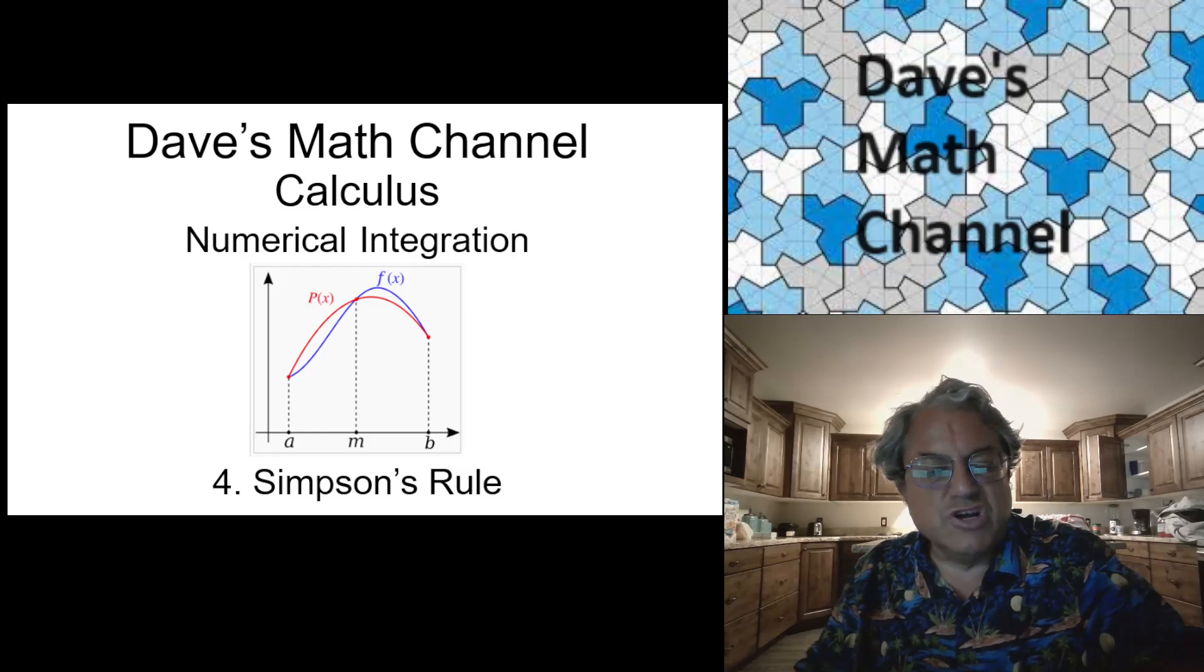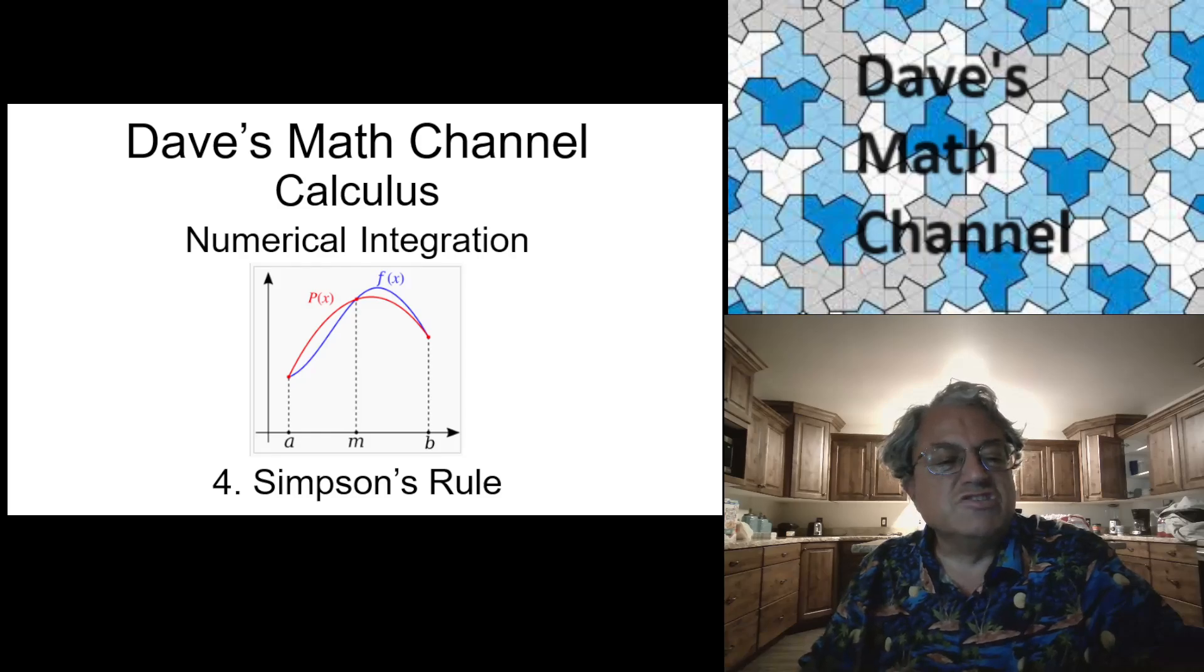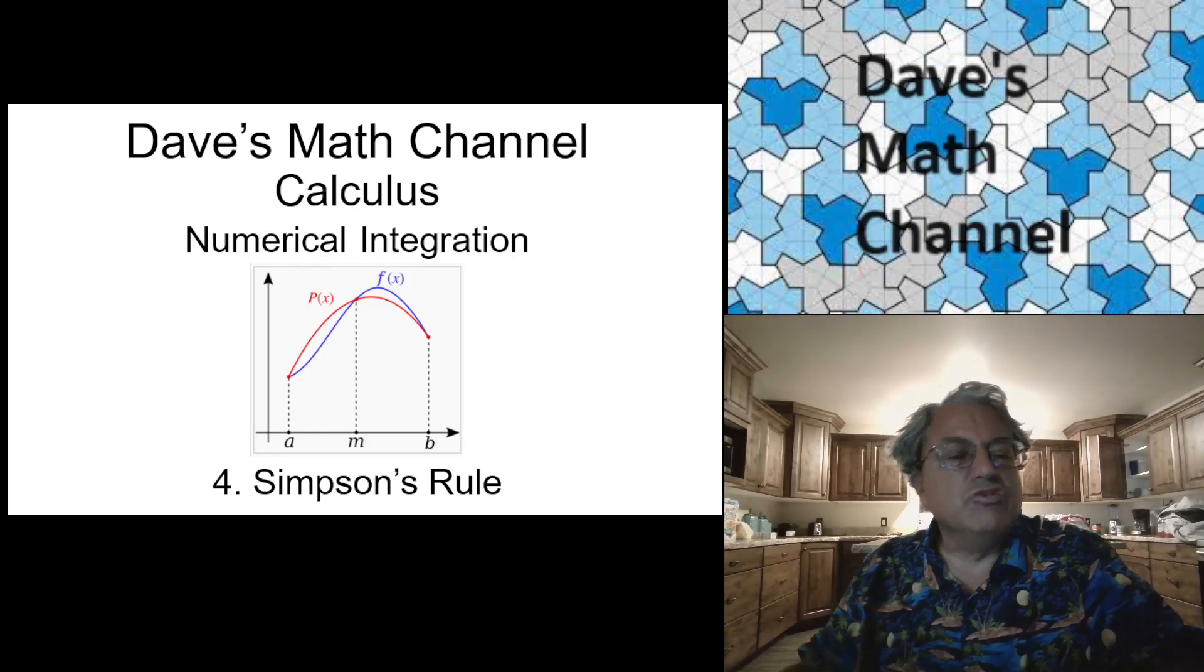this is the last rule I'm going to talk about for numerical integration. It's called Simpson's rule and it's a very precise rule. It's one of the best known rules for numerical integration. And the way it works is, if you look at this picture, what you're doing is this is the simplest case. This is just n equals 2, two intervals as you can see. And what you do is you always have to have an even number of intervals.